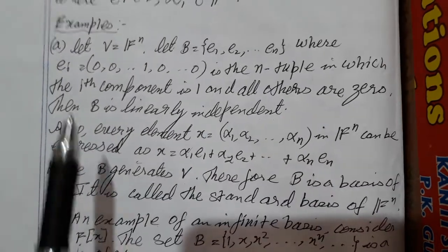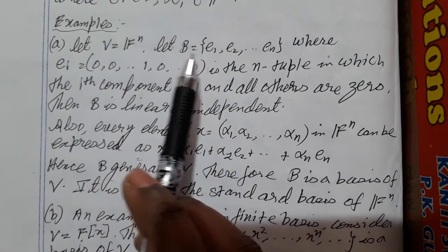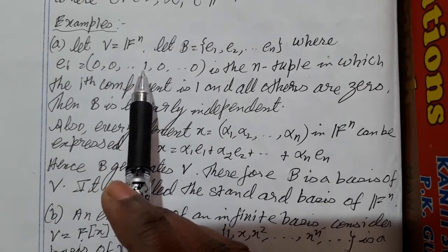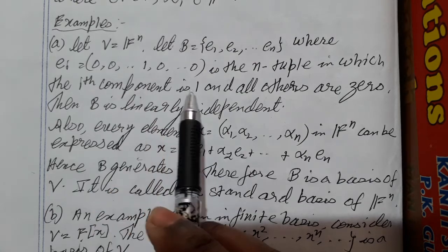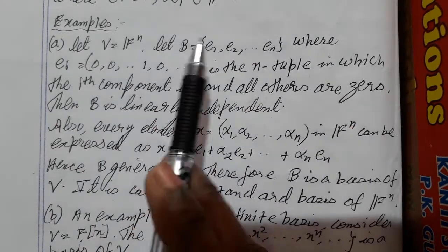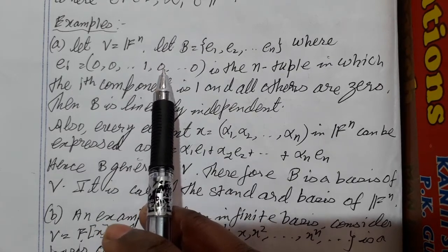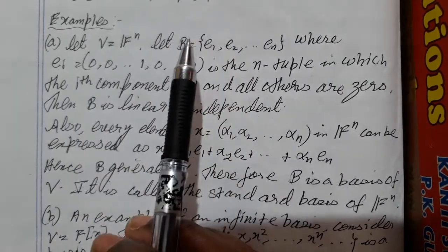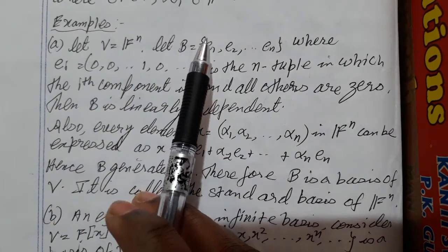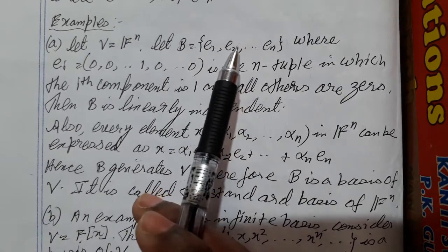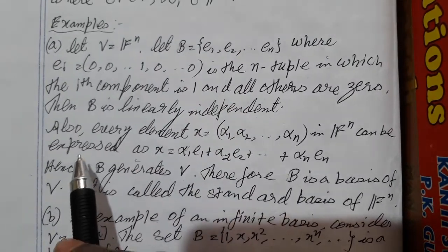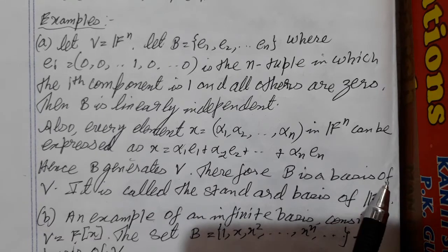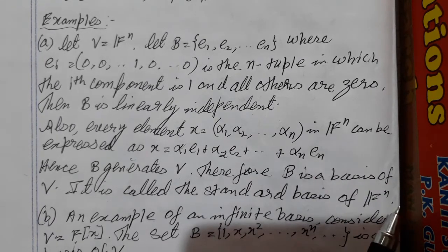There are some examples of the basis. If I take V to be F^N, then the basis I take as E1, E2, ..., EN, where E_i has 1 in the i-th coordinate and all other coordinates are 0. We can see easily that this set is linearly independent and every vector in V can be written as a linear combination of this. Since it is linearly independent and it spans V, this is a basis for V, and these are called the standard basis of F^N.